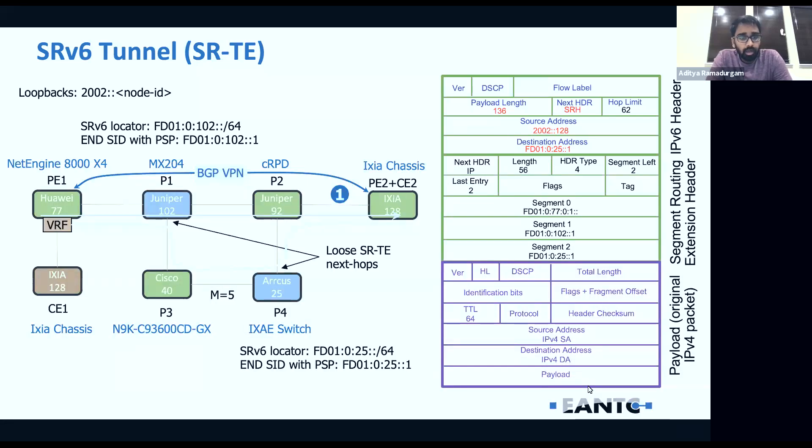Amongst these four, Arcus 25 and Juniper 102 are configured with SRv6, so they perform specific SRv6 network functions. At a high level, what's happening here from a control plane point of view: Huawei is advertising the BGP VPN v4 routes to Ixia. It's a standard VPN format, but there's an extended community, which is an SRv6 end DT4 SID that gets advertised. It's a downstream assigned end SID.